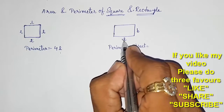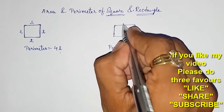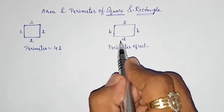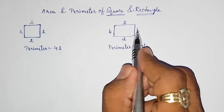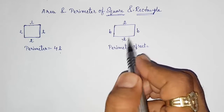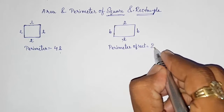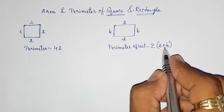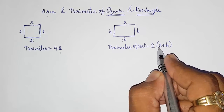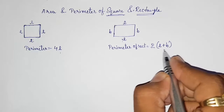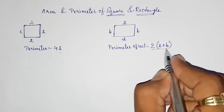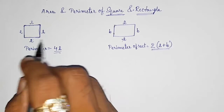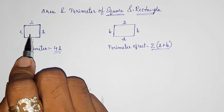For the perimeter of a rectangle: this side is length, so the opposite side is also length; this side is breadth, so the opposite side is also breadth. So two times length plus two times breadth. Taking two as common: two into bracket L plus B. This way you can find out the perimeter of rectangle, and four into length gives the perimeter of square.